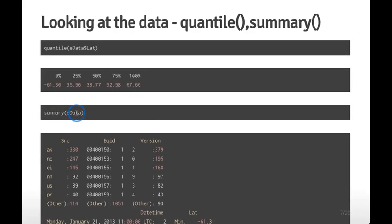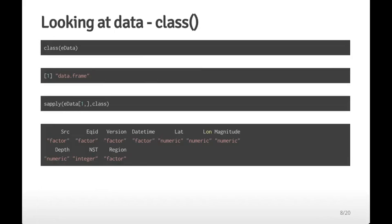You can also apply the summary() command to the entire data frame. For quantitative variables you get quantile information, but for qualitative variables you get a different kind of summary. For example, for the source variable — which has different characters corresponding to different detectors — summary shows that 330 observations were detected with the AK detector. You can also check whether variables that should be numeric are being loaded as character variables or vice versa by looking at the class of the entire data frame.